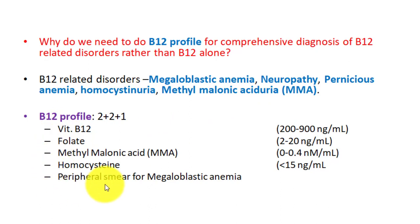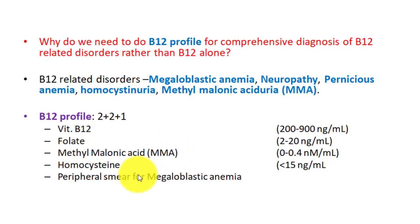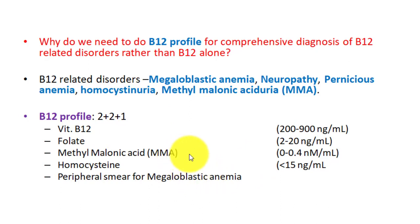This is the vitamin B12 profile. Just memorize these five tests. If we do five tests together, we can comprehensively approach the diagnosis and determine where the defect is. First, we do vitamin B12 and folate together. Second, a peripheral smear for megaloblastic anemia — a very cost-effective test. Those three tests we generally do. But we need to incorporate two more: methylmalonic acid estimation and homocysteine estimation. When we do all five tests together, we reach a comprehensive diagnosis of vitamin B12 deficiency related to vitamin B12 metabolism.